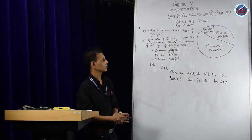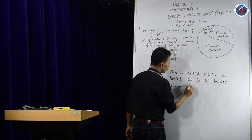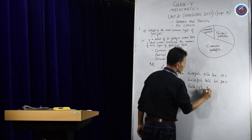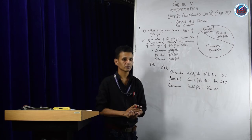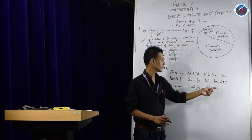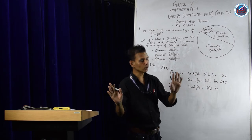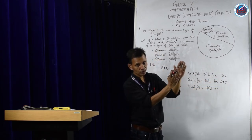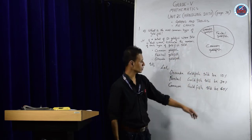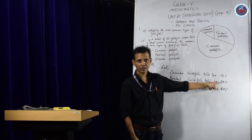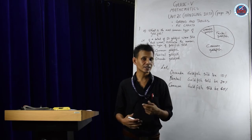Now for common goldfish, which was the highest sold. I cannot just take any number I wish, because 30 plus 10 is already 40. To reach 100, I have 60 remaining. So common goldfish sold must be 60%. Check: 60 plus 30 plus 10 equals 100. That's correct because percentage means out of 100.